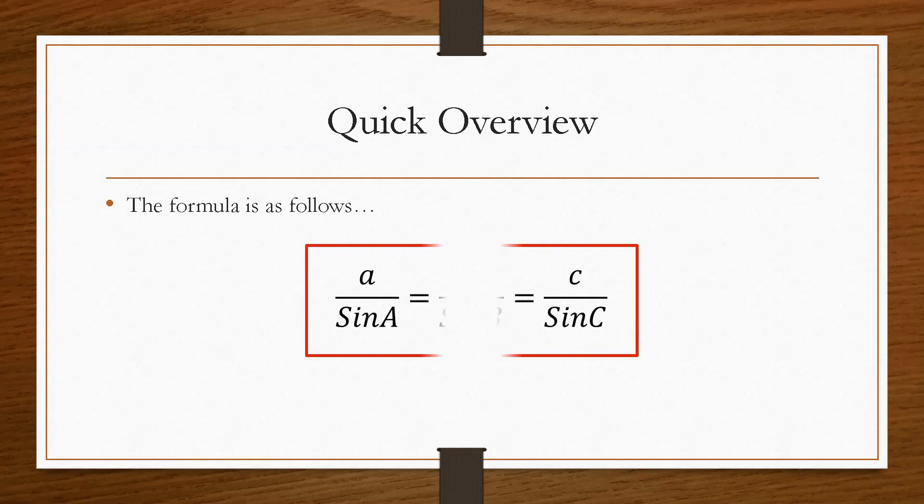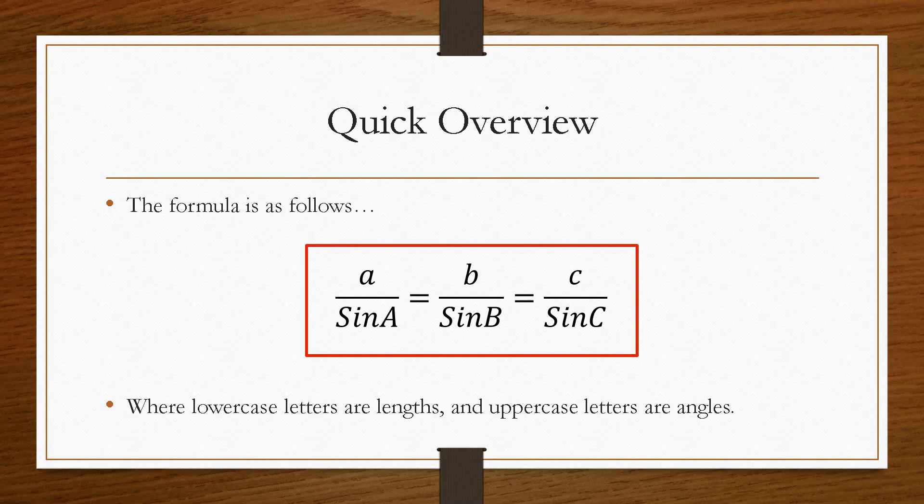So the formula is as follows: small a over sine capital A equals small b over sine capital B equals small c over sine capital C. Now the lowercase letters indicate the size of the triangle and the uppercase letters denote the angles. Once we have the values of A, B, C, then it is a case of plug it into the calculator and solve for your unknown value.